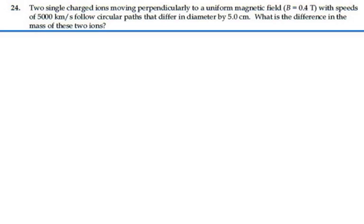Here's problem 29-24. Two singly charged ions moving perpendicularly to a uniform magnetic field equal to 0.4 tesla with speeds of 5,000 kilometers per second follow circular paths that differ in diameter by 5 centimeters. What is the difference in the mass of these two ions?